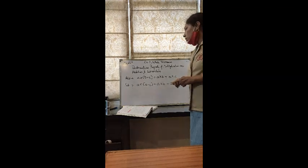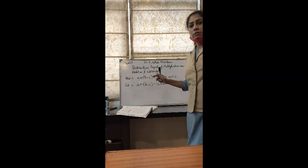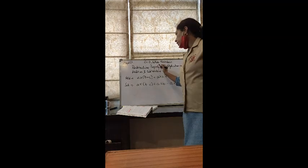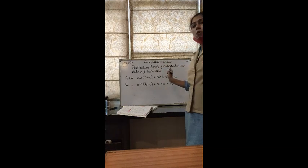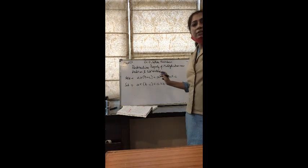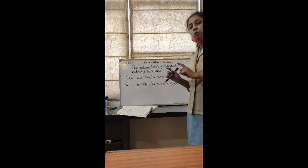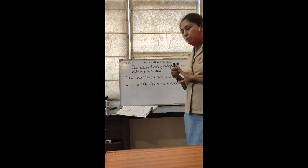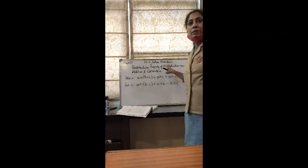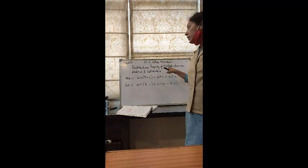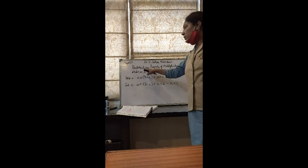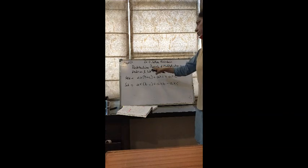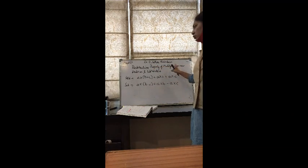Good morning children. Today we will cover, under whole numbers, the distributive property of multiplication over addition and subtraction. So far you have done four properties: closure property, commutative property, associative property, and identity property. Now this is the fifth property — the distributive property — and it is very important. You must also mind the terminology: distributive property of multiplication.